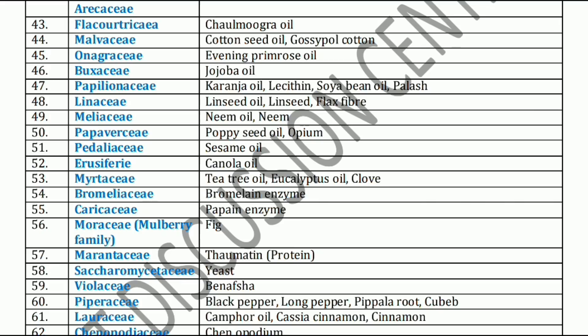Linaceae family. Linaceae family has Linseed oil, Linseed, and Flax fiber. Next, Meliaceae family. Meliaceae family has Neem oil and Neem. Next family is Papaveraceae. Papaveraceae family includes Poppy seed oil and Opium.